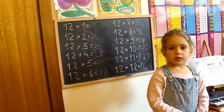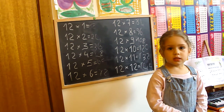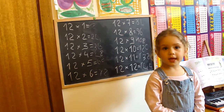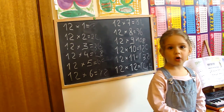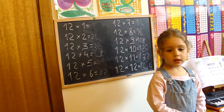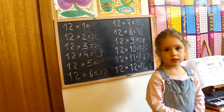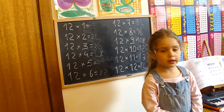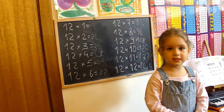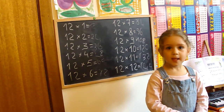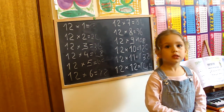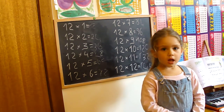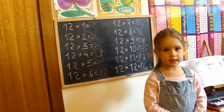Twelve times six, seventy-two. Twelve times seven, eighty-four. Twelve times eight, ninety-six. Twelve times nine, hundred-eight. Twelve times ten, hundred-twenty.